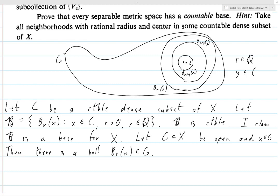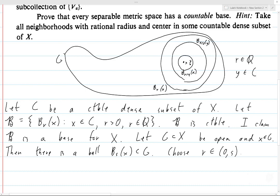An open set is a set where every point is in the interior, meaning you can find such a ball — so all possible balls form a base. All we need here is that there is some ball contained in G which contains x. Choose some number r which is strictly less than s, strictly greater than zero, and rational. Then x is also in B(r, x), and B(r, x) is contained in B(s, x) because it has a smaller radius, and that is contained in G. So B(r, x) is contained in G.